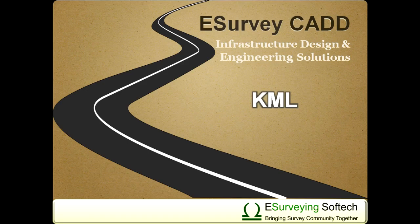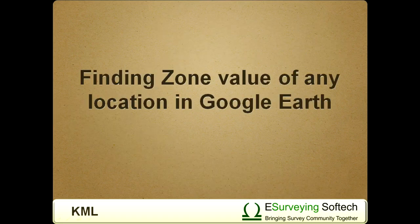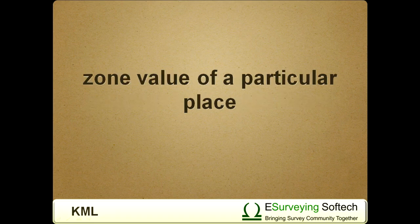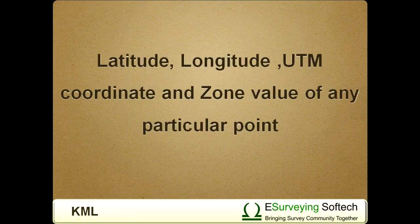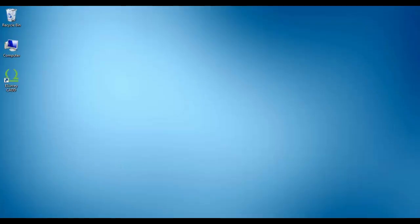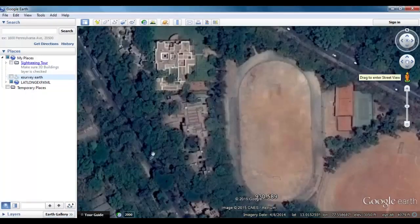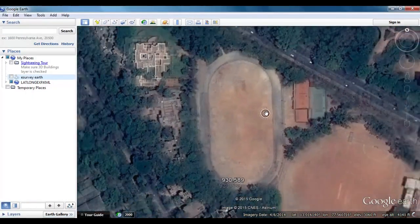Finding the zone value of any location in Google Earth. In one of the previous videos we learned how to convert a drawing to a Google Earth KML file. It is necessary to know the zone value of a particular place before we convert the drawing to KML. In this video we will learn how to find the latitude and longitude of a particular point and how to find the UTM coordinate and zone value of a point on the Earth's surface using Google Earth.